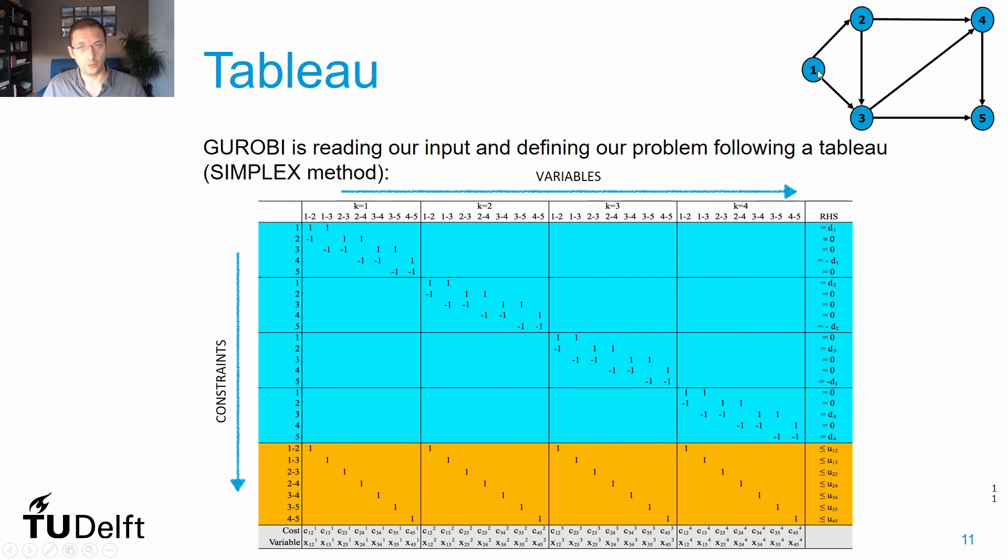In commodity two, also starting node one, you also have again the two arcs, and this has to be equal to the demand being generated in node one. For commodity three, you don't have any generation of demand there for commodity three, so what goes in arc 1-2 and 1-3 needs to be equal to zero. This is built for all—so this is all your constraints regarding to the flows and the demand per commodity.